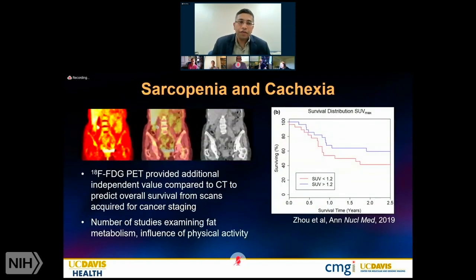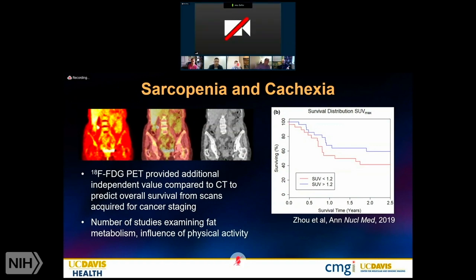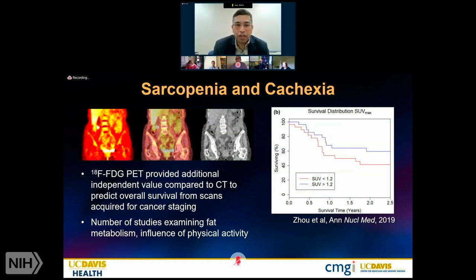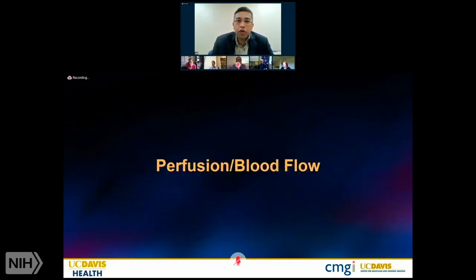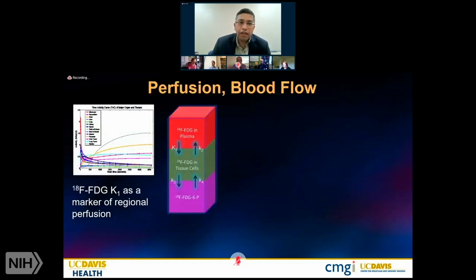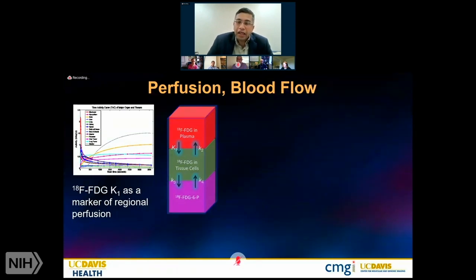Fatty infiltration is another consideration. There is proof that sarcopenia and cachexia have been imaged with PET — the fluorodeoxyglucose PET in this context provides independent value over anatomical imaging modalities for evaluation of muscle, and this has been correlated with survival in cancer staging. There have also been studies on fat metabolism and physical activity. Perfusion can also be evaluated: using the same radiotracer for deoxyglucose, you can watch the wash-in and wash-out characteristics rather than just steady-state metabolism, correlating wash-in with perfusion. There is also a long history in PET of radiotracers specific to blood flow, such as oxygen-15 water or carbon-11 butanol.